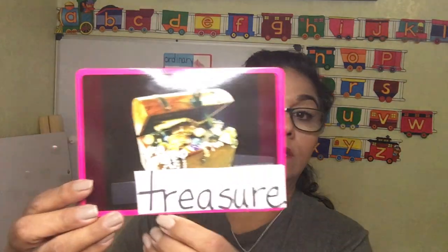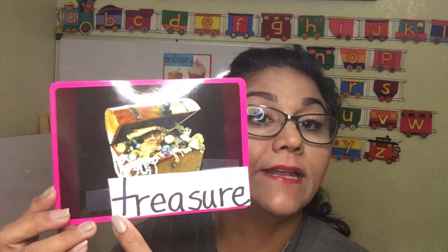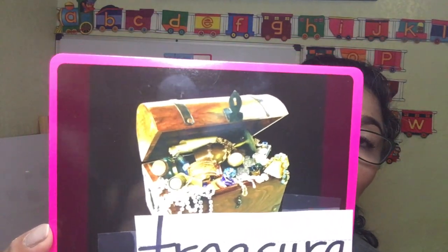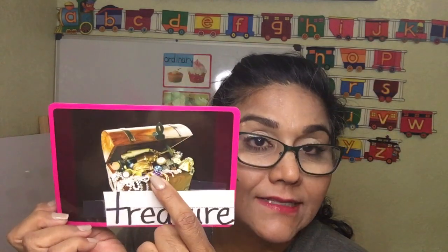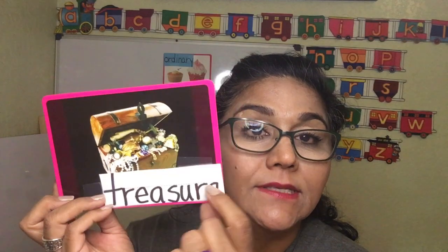The letter T — treasure! There is a treasure under the ocean with lots of jewels and diamonds and pearls. Treasure. You know how I tell you that you're my treasure? So I have to keep you nice and safe and take care of you. Treasure.